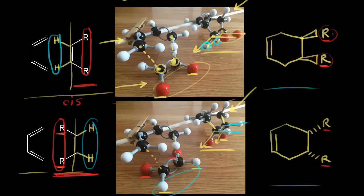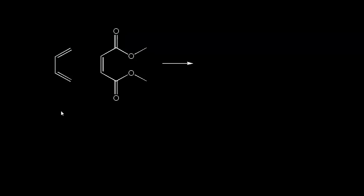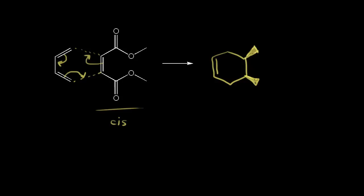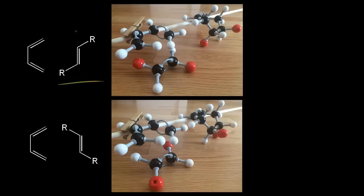Now if these R groups are the same, it doesn't matter how you represent the product. Let's draw the product for an example Diels-Alder reaction with a cis diester dienophile. We form the cyclohexene ring first. Since the stereochemistry is cis, the two groups must be on the same side of the ring — we can use either wedges or dashes. Using two wedges, we draw an ester coming out at us at both positions. That gives us our product.